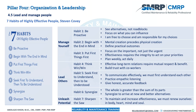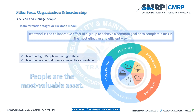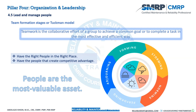The Seven Habits of Highly Effective People teaches how to manage yourself, lead others, and unleash potential — a golden tool for personal and professional success. Team formation follows Tuckman's stages: Forming, Storming (conflicts as individuals hold to their own mindsets), Norming, Performing (excellent output), and Adjourning when the project ends and people move on.